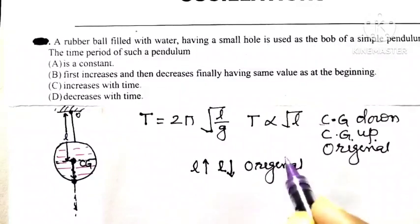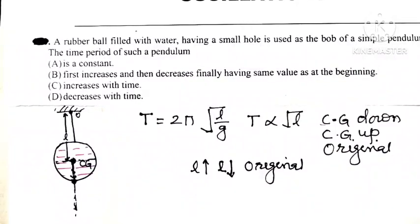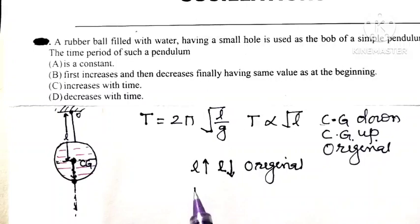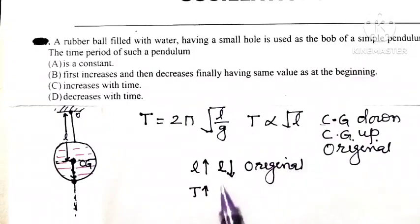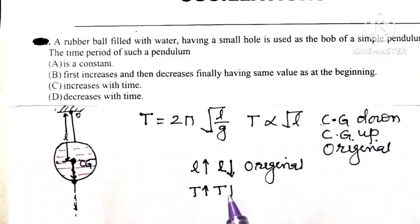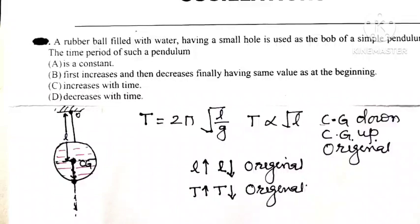Finally length will reach its original value. And because we know that when length increases, time period initially increases. When length of pendulum goes on decreases, then time period decreases. And finally that time period reaches its original value.